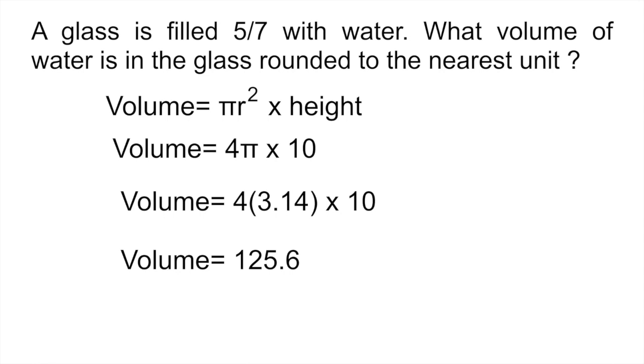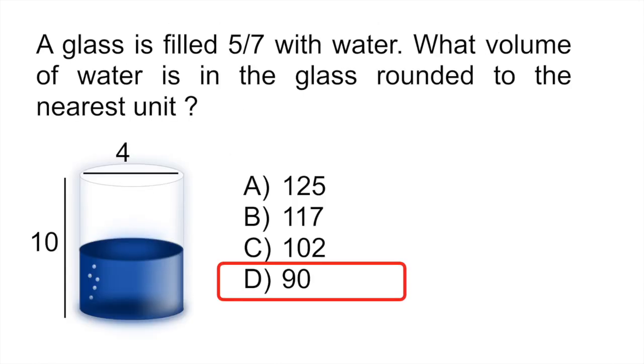But notice we haven't finished because it tells you that the glass is filled 5/7ths with water. And they're asking you that volume of water. So what you would have to do now is multiply that number by 5/7ths, like that. How do you multiply fractions? You just multiply across. So you would multiply 125.6 multiplied by 5, and then you would divide that by 7. That gives you 90, which is answer D.